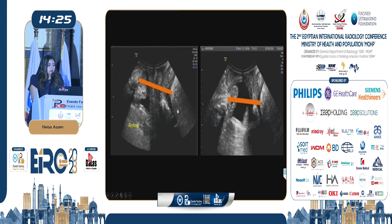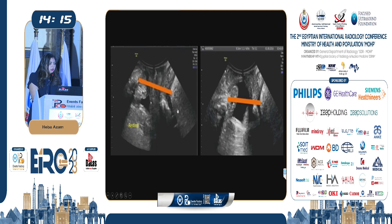In this case, the left image is during resting and the right image is during straining. Anteriorly, the symphysis pubis and the reference line are visible. We can identify the bladder neck, urethra, vagina, anal canal, and rectum, as well as the puborectalis muscle.